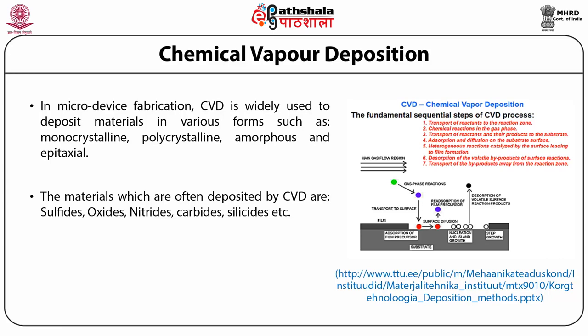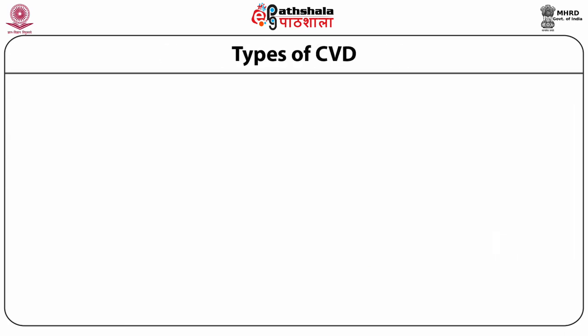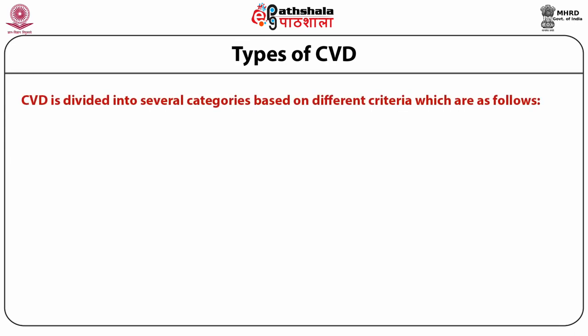This figure shows the fundamental sequential steps of the CVD process. First, transport of reactants to the reaction zone. Second, chemical reactions in the gas phase. Third, transport of reactants and their products to the substrate. Next, adsorption and diffusion on the substrate surface. Then, heterogeneous reactions catalyzed by the surface leading to film formation. Next, desorption of volatile byproducts of surface reactions. Lastly, transport of the byproducts away from the reaction zone.